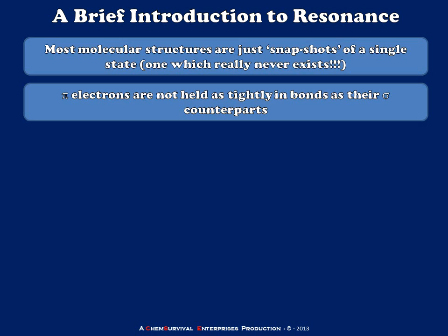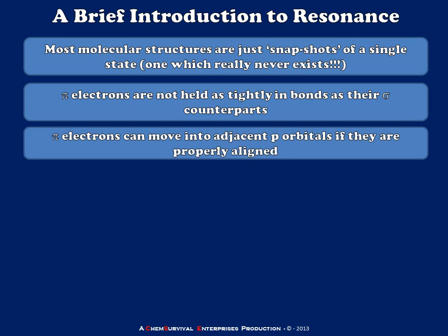Pi electrons aren't held as tightly in bonds as their sigma counterparts. The energy of a pi bond — for a carbon-carbon pi bond — is only about half that of a carbon-carbon sigma bond. So those electrons have more ability to roam. Pi electrons can also move into adjacent p orbitals as long as they're properly aligned, allowing them to jump from one atom to another or from one bond to another.